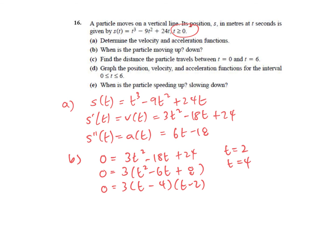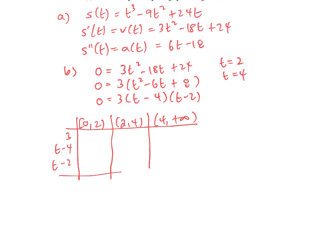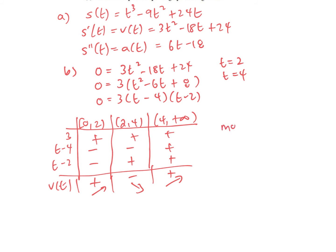I'm going to make an interval table checking from zero to two, two to four, and greater than four. We put in the factors and check the signs in these intervals. Three is always positive. The signs work out as positive, negative, positive. So the particle is moving up between zero and two, moving down between two and four, and moving up again for greater than four.